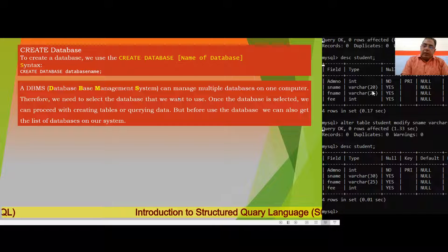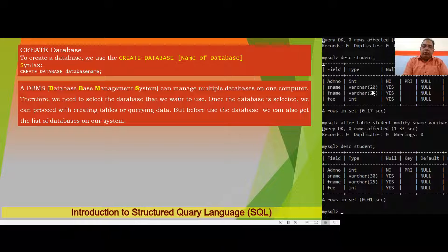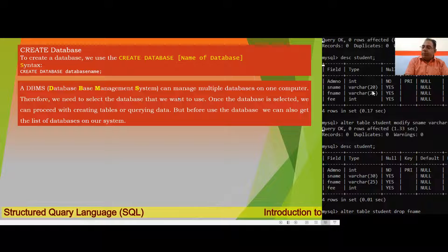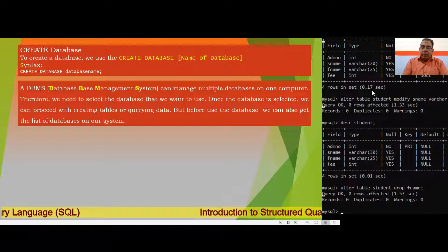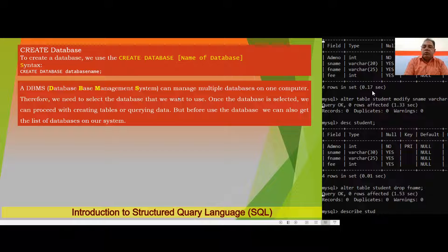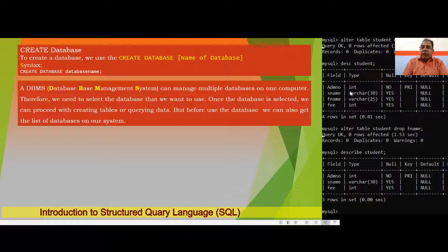The DROP sub-command is used to remove a column from a table. Write: ALTER TABLE student DROP fname; put a semicolon and press Enter. A column will be deleted. To verify, run DESCRIBE student — the fname column is now missing because it has been deleted.